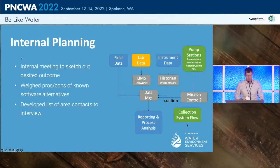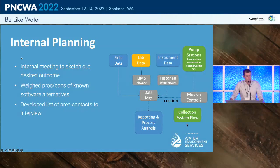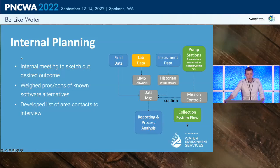At the onset, all those stakeholders laid out our desired outcome — essentially the creation of a new data management hub, a new piece of software that would automatically interface with our other sources of data, as well as serve as a new database for all our manually entered field data that currently lives on pieces of paper or in spreadsheets. There were some question marks — pump station data, some connected to historian and some not, and cloud-stored collection system flow monitoring data. Our staff at other facilities was familiar with some off-the-shelf software, and we developed a list of area contacts, basically picked up the phone and asked what they were using and what challenges they faced.